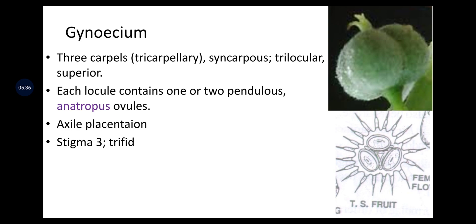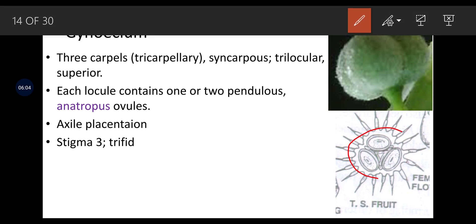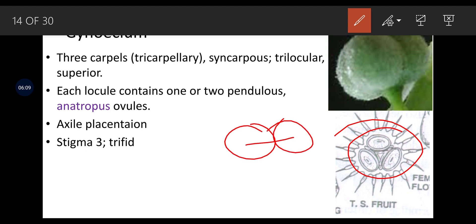Gynoecium: 3 carpels, that is tricarpillary, syncarpous, trilocular and superior gynoecium. Each locule contains one or two pendulous anatropous ovules. Axile placentation. There are 3 stigmas and the stigma is trifid. In the case of the Euphorbiaceae family, stigmas are trifid — as opposed to cereals which have bifid stigma.